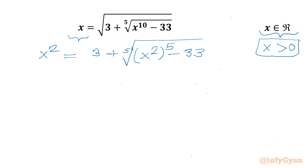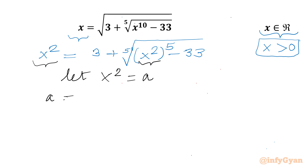Now clearly we can consider a substitution. Let x squared equal to a. So we write our equation as a equals 3 plus fifth root of a to the power 5 minus 33.